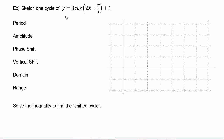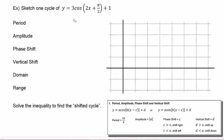One of the first things we want to do is rewrite the function into standard form where the argument is factored. We'll factor out the two: two x becomes x, and pi over two multiplied by one half becomes pi over four. So the function becomes three times the cosine of two times the quantity x plus pi over four, plus one.